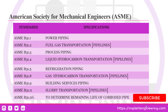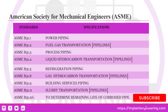ASME B31.4 indicates the pipeline transportation for liquid hydrocarbons. ASME B31.5 is used for refrigeration piping — that is, piping used below zero temperature.